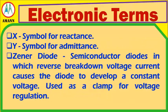X: Symbol for reactance. Y: Symbol for admittance. Zener Diode: A semiconductor diode in which the reverse breakdown voltage causes the diode to develop a constant voltage. Used as a clamp for voltage regulation.